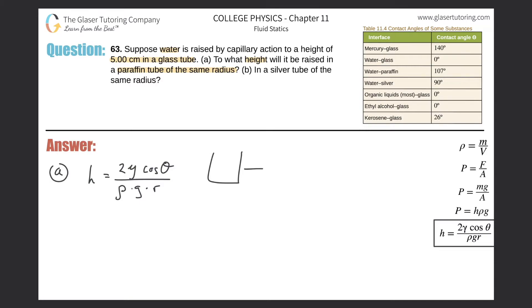the surface tension of the water hasn't changed. The density hasn't changed. The gravity hasn't changed. The radius hasn't changed. The 2 hasn't changed. The only thing that's changed is the contact angle and the height. So these two things are when I'm creating a proportion, the only two things that are changing in my problem are going to be the contact angle and the height. What that basically means is that all this other stuff is basically irrelevant.